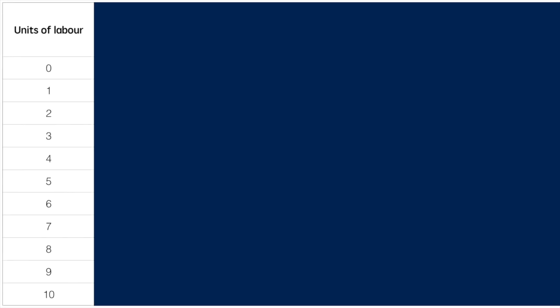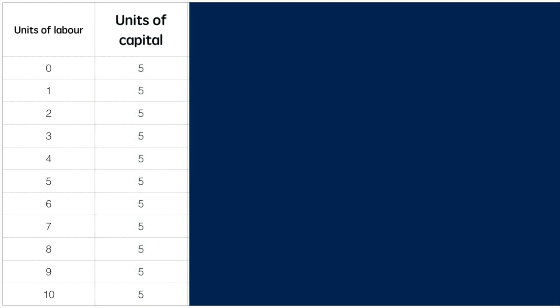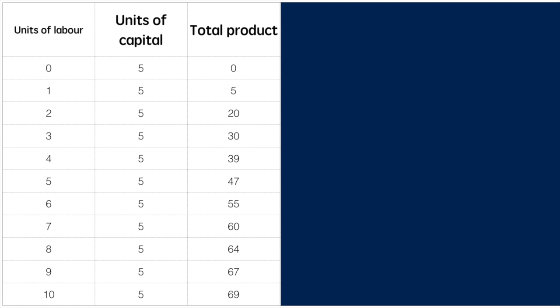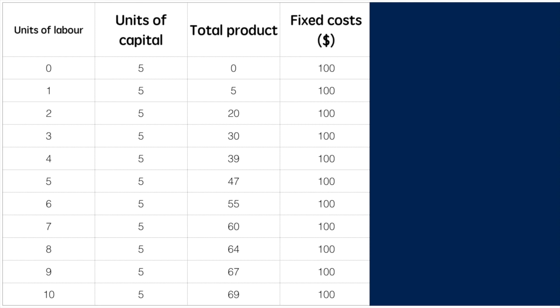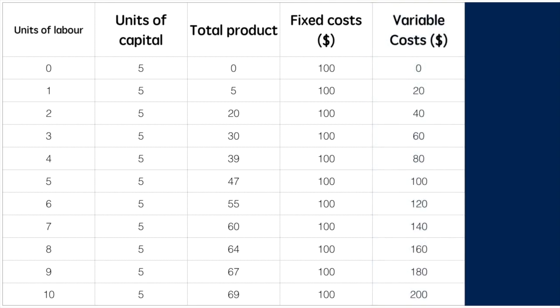To arrive at our marginal and average costs we have to work our way there from labour and production information. The first column is for our units of labour, which increase from 1 to 10 workers at the restaurant. The units of capital are held constant because they are assumed to be fixed in the short run. The total product as a combination of variable and fixed factors is listed in the third column. The fixed costs total $100 and do not increase as output does — this is our cost for the restaurant capital and other fixed equipment per month. Variable costs are simplified to just reflect the increase in the units of labour; each unit of labour is $20 per month per worker, again a simplification for this example.